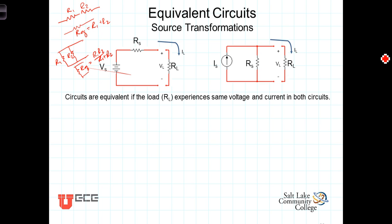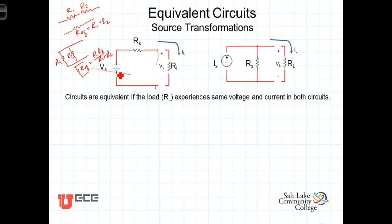We're going to now see another way of simplifying circuits using what's known as source transformations. What we want to demonstrate is that a combination of a voltage source in series with a source resistance can be replaced with an equivalent circuit consisting of a current source and a parallel resistance. The value of the resistor is the same in both cases, and we need to determine the relationship between the current source and the voltage source so that these two circuits are equivalent.